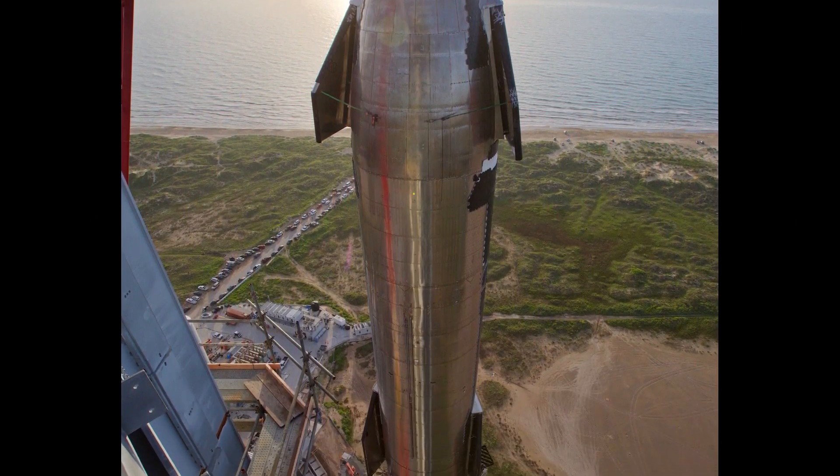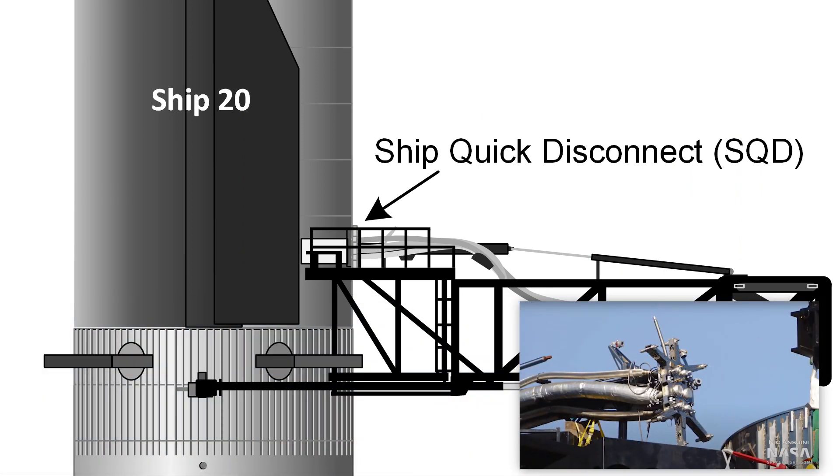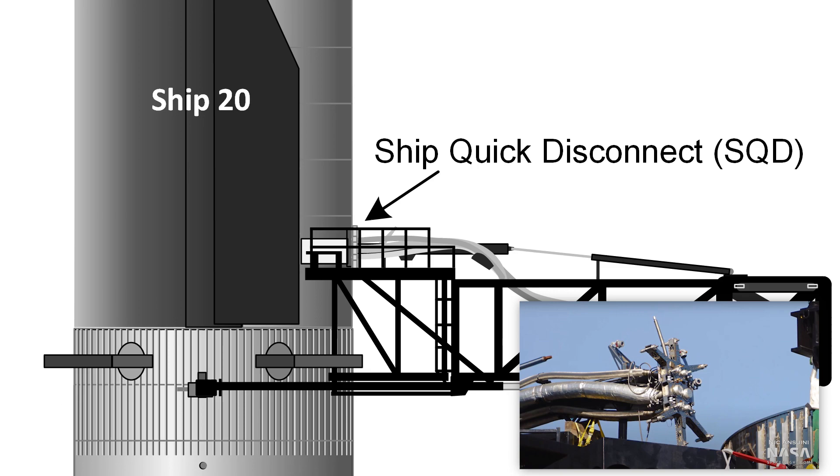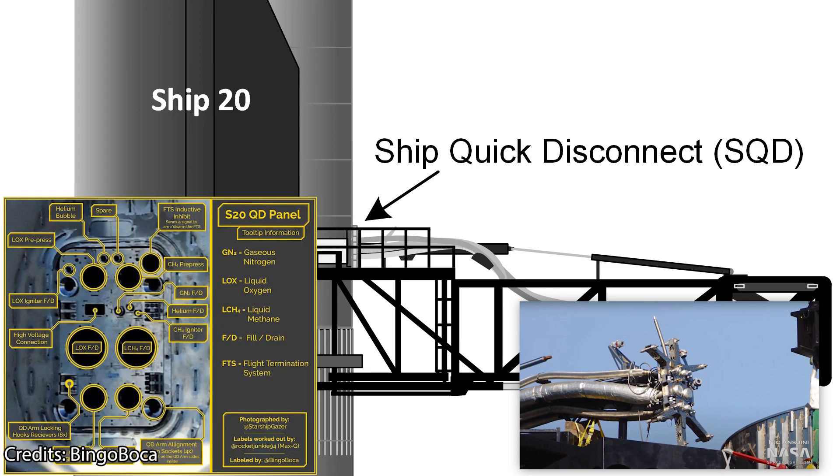Once the full stack has been achieved, the ship quick disconnect will close the gap two meters wide to attach itself to the panel on the outside of the spacecraft and begin with the filling or draining of liquids, in this case liquid oxygen and liquid methane, as well as the transfer of gaseous nitrogen and helium, among other things.